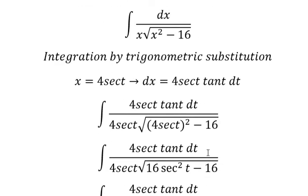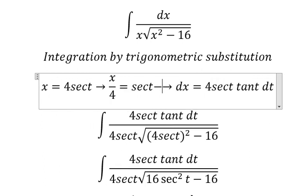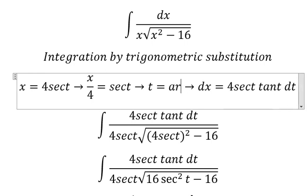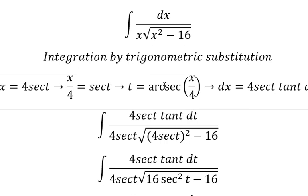For t, that is about this one. So we need to divide both sides by 4. And we got t equals to arcsec of x over 4. So I need to put this one to change for t.